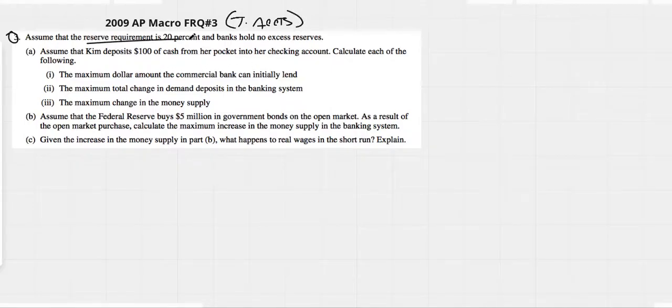Assume that the reserve requirement is 20% and the bank holds no excess reserves. Now this, for some reason, confuses people. It just implies that when we start out, there are no monies in excess reserves. Now, Kim will deposit $100 of cash. Remember, liabilities on the right, assets on the left.